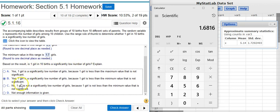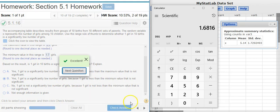So I want, yes, it's a significantly low because it's less than the minimum value that's not significant. Excellent!